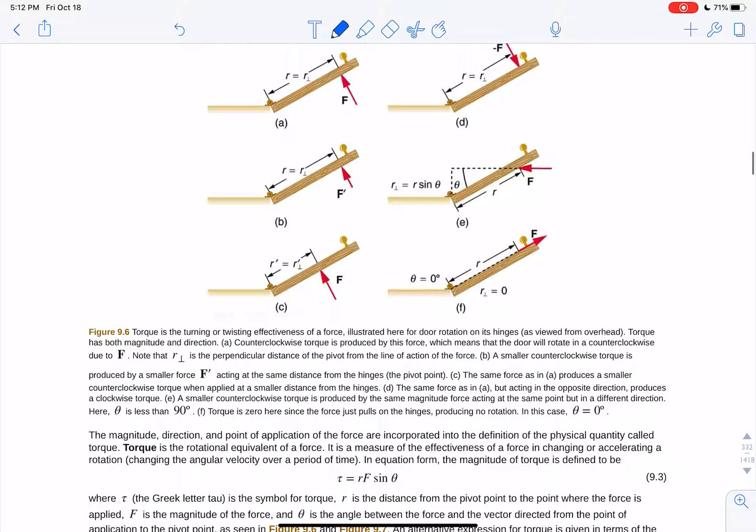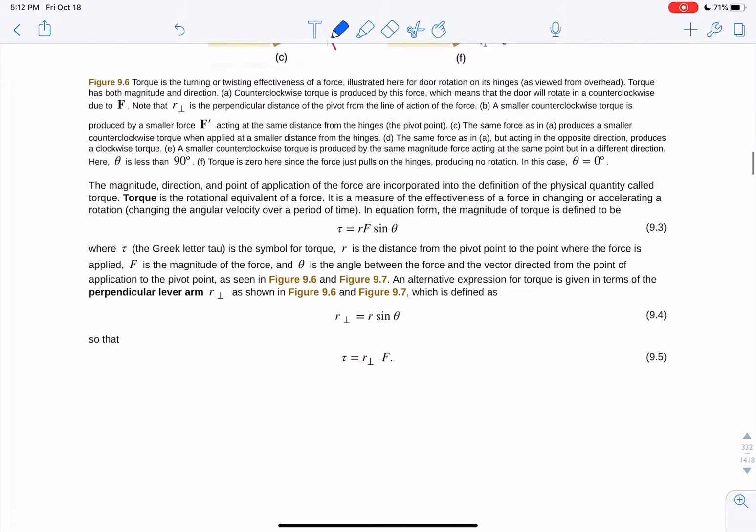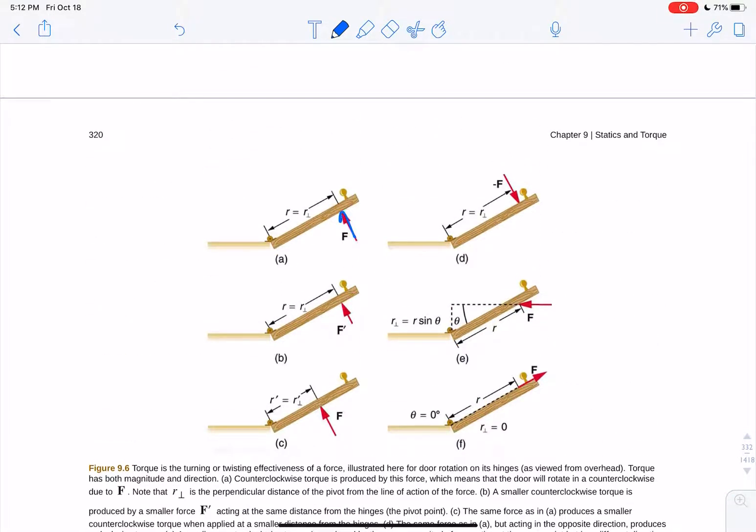The second condition for equilibrium is that the torques have to be zero, the sum of the torques have to be zero. Well what is a torque? A torque is the force you're applying times the distance between the force and some axis of rotation. For a door the hinge is a natural reference point, but you could measure the torque from any reference point as long as you're consistent.